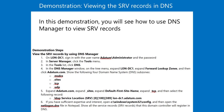Note that the Netlogon service running on each domain controller registers the SRV records in DNS. If it does so incorrectly, you can trigger the domain controller to re-register those records by restarting the Netlogon service. This re-registers only the SRV records. If you want to re-register the host record information in DNS, you must run ipconfig /registerdns from the command prompt, just as you would for any other computer.